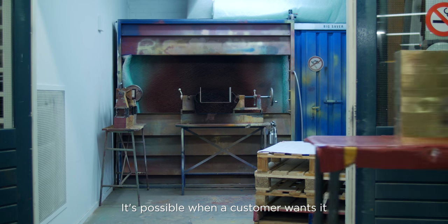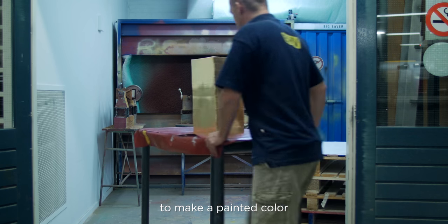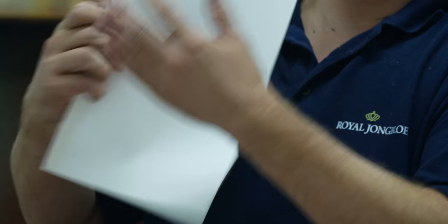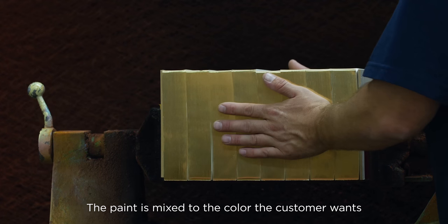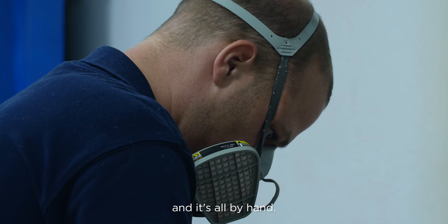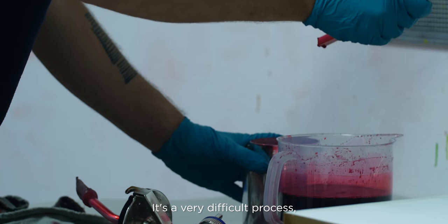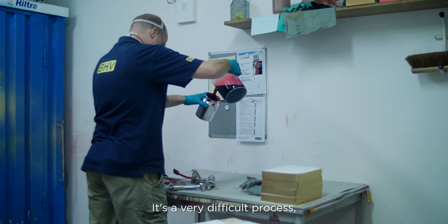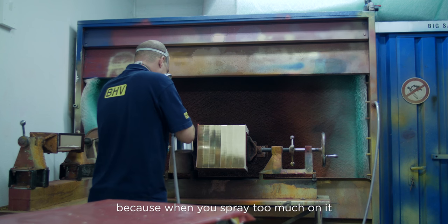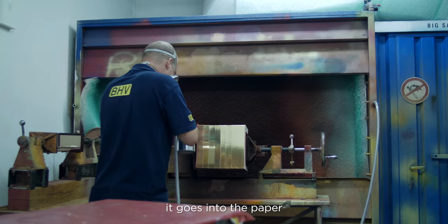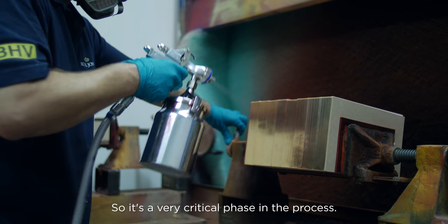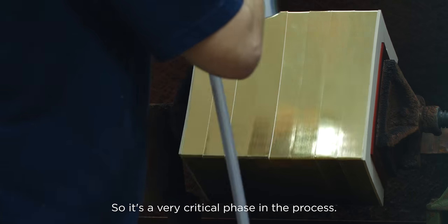It's possible when a customer wants it to make a painted color over the gilding. The paint is mixed to the color the customer wants. It's all by hand. It's a very difficult process. You've got to have a good feeling with it. Because when you spray too much on it, it goes into the paper and the whole book is destroyed. So it's a very critical phase in the process.